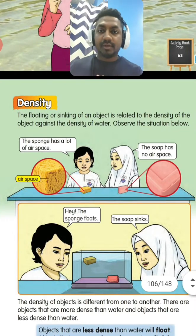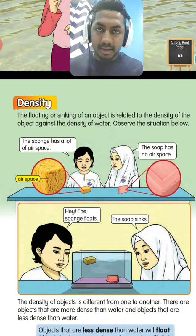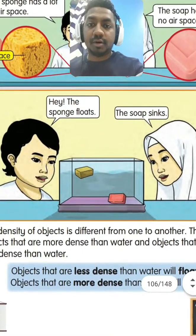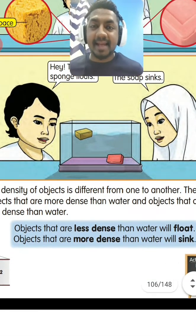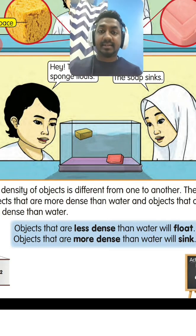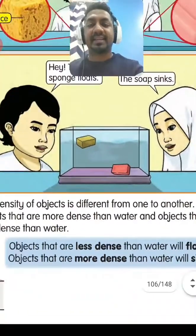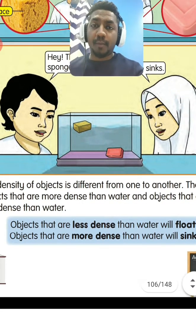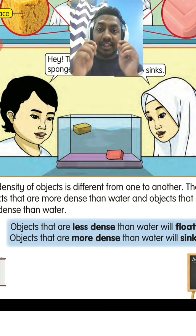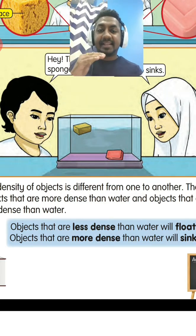Look at the density. The floating or sinking of an object is related to the density of the object against the density of water. The sponge floats because it is less dense than water. The soap sinks — objects that are more dense than water will sink. So the soap is more dense than water. The concept is: if the object is less dense than water, it will float; if it is more dense than water, it will sink.